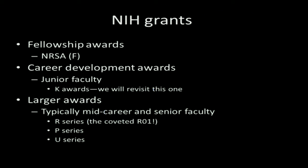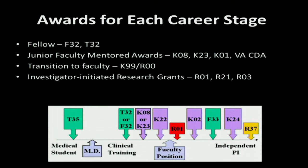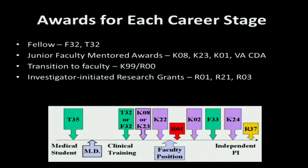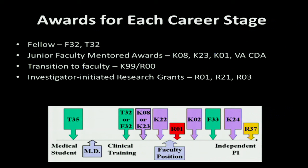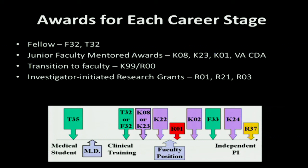NIH has an award for each stage of your career. At the medical student level, very few are eligible unless they've taken a year or two off focused primarily on research. There are training awards mostly during fellowship — I'm not aware of anyone doing this during residency because you need a significant amount of time devoted to research. Then there are junior faculty awards, and more senior faculty awards. Eventually, the goal is to reach an independently funded career — that's where the independent PI awards come in, where the R01s, P's, and U's come into play.